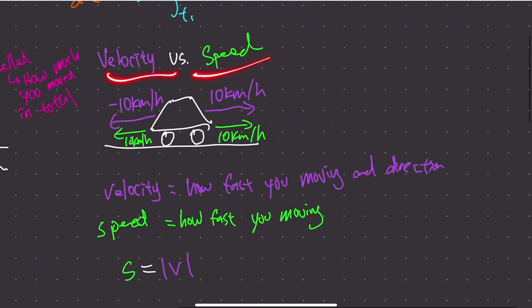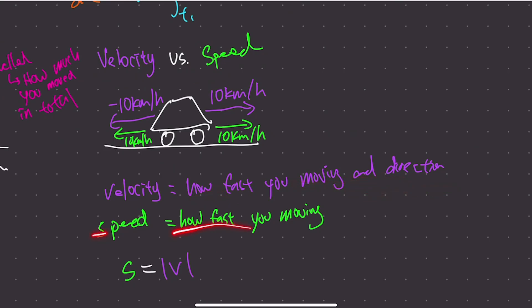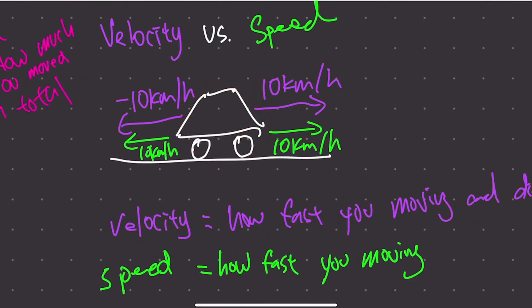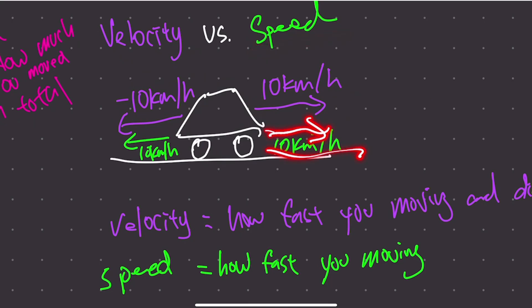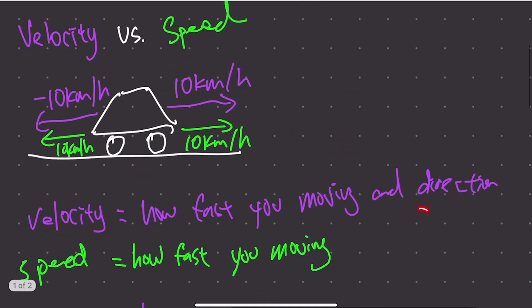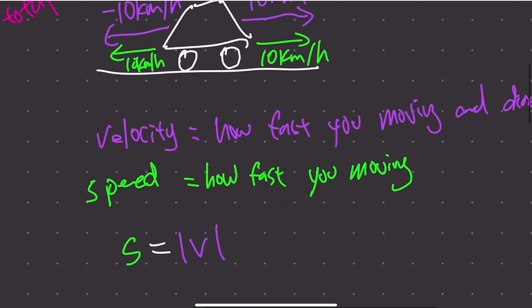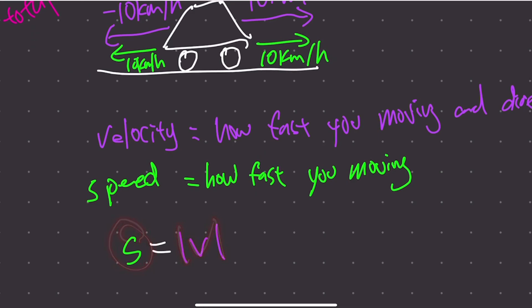Second concept: velocity versus speed. Velocity means how fast you're moving and in what direction, while speed is just how fast you're moving — direction doesn't matter. For example, a car moving right at 10 km/h has velocity +10 km/h; moving left, it's −10 km/h. But the speed is 10 km/h either way. In algebraic form, speed equals the absolute value of velocity.